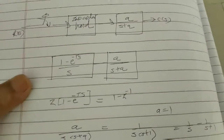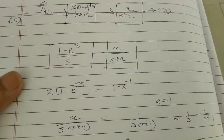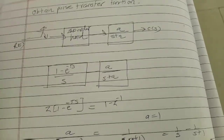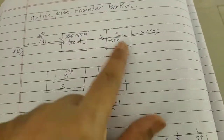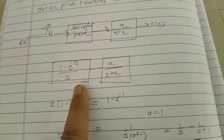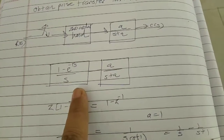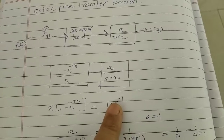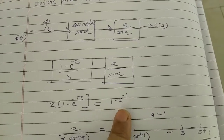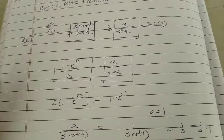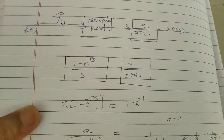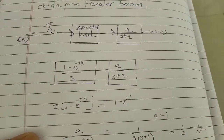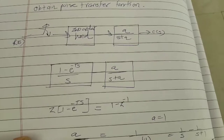In control systems, you will be asked to find the pulse transfer function, which means you have to express this function in terms of Z-transform or in the Z-domain, because for digital signals you use the Z-domain, and for analog signals the Laplace domain is used.